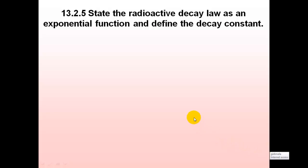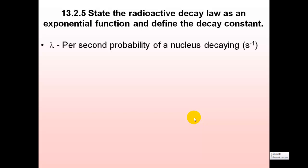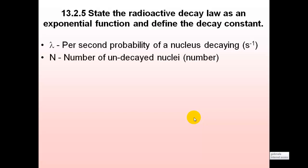State the radioactive decay law as an exponential function and define the decay constant. Lambda is the decay constant — it's the probability of a nucleus decaying in one second. N is the number of undecayed nuclei, in other words the number that are left that have not decayed. Delta N divided by Delta T is the rate of change of N, in other words the number of nuclei that are decaying per second.